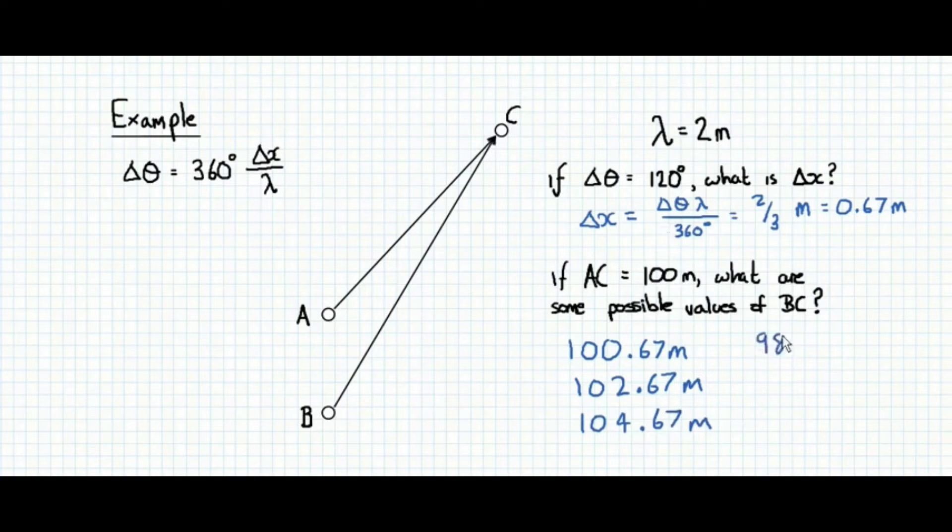Or indeed, we could subtract an integer number of wavelengths from this list. But of course, the diagram indicates that BC is further. So I don't think it would be any of these as an answer. A popular question that you could be asked is to find possible values of BC where you are given the distance between A and B. In that case, you have to do some geometry to solve that problem. And a diagram is going to be essential in this sort of problem.